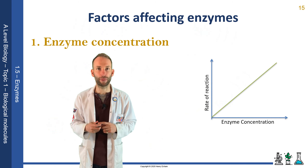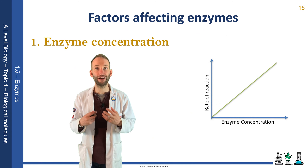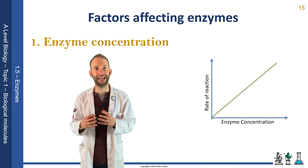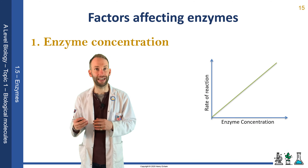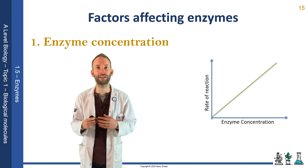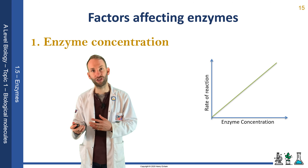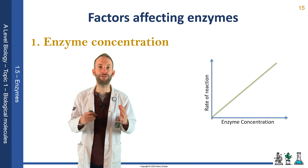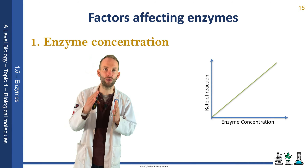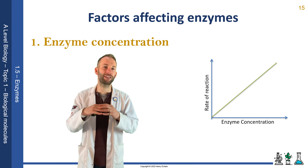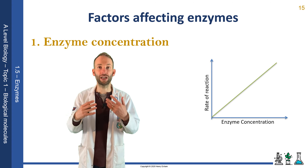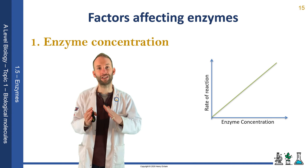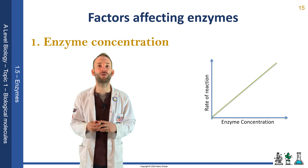Enzymes are very efficient and you only need a small amount for the reaction to work. However, if you add more enzymes, the rate of reaction will increase, as shown by the graph. More enzymes increases the chance of collisions. It will only keep increasing if you maintain the substrate concentration — this is why measuring the initial rate is important, because substrate gets used up, turns into products, and the rate tails off quite quickly.